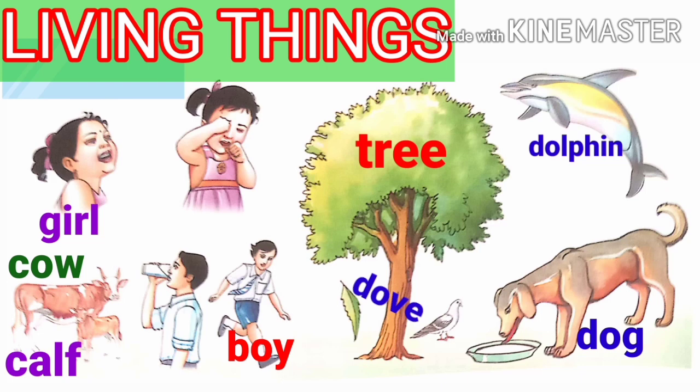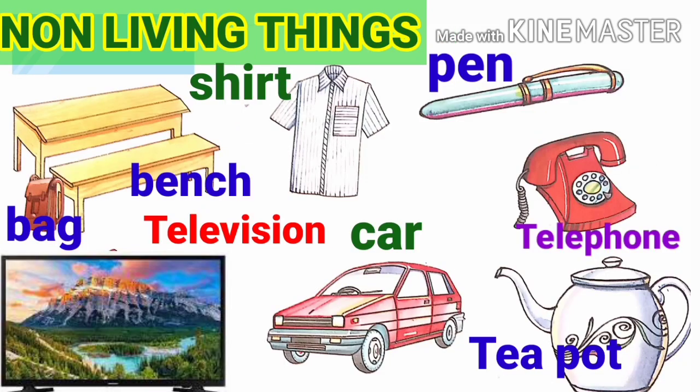Look at this picture. What are there in the picture? Gull, cow, calf, boy, tree, doe, dolphin, dog. These are living things.